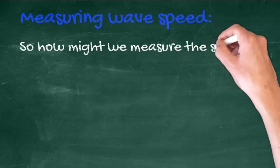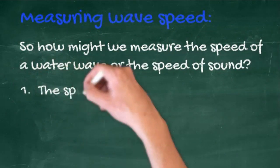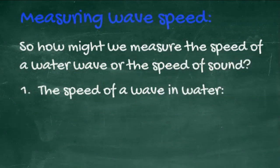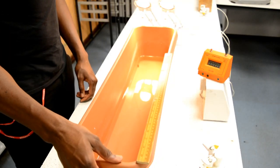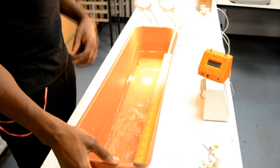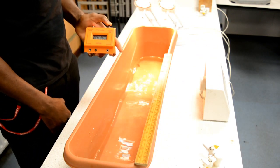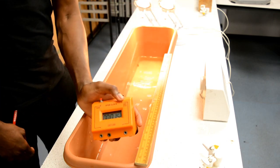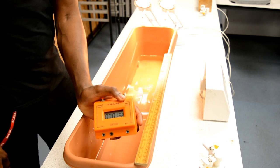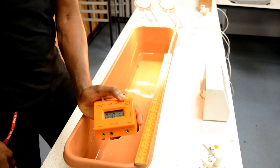How might we measure the speed of a water wave or the speed of sound? Looking at the speed of a wave in water: this simple demonstration uses a plant pot, a metre ruler, and a stopwatch. You time how long it takes for the wave created to travel half a metre, then use the equation wave speed equals distance divided by time.